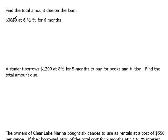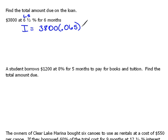For our problem here, we're borrowing $3,800 at 6.5% for six months. So I know that the interest will equal $3,800 — because that's the principal — times the interest rate. Remember, 6.5% is the same as .065 if you move the decimal over two places. Then for six months, that would be 6/12 of a year.